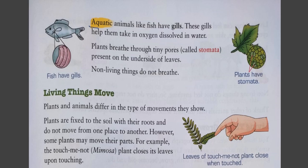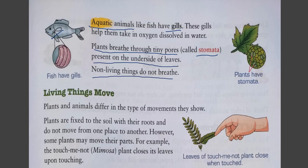Aquatic animals like fish have gills; these gills help them take in oxygen dissolved in water. We can see a fish having gills. Plants breathe through tiny pores called stomata present on the underside of leaves. Non-living things do not breathe.